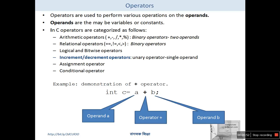Operators are categorized in different types. Arithmetic operators are those used to perform arithmetic operations like plus, minus, division, multiplication, and modulus. These are called binary operators because they require at least two operands. Similarly, we have relational operators which are used to compare two or more operands, so relational operators are also binary operators.